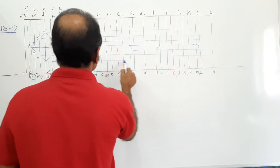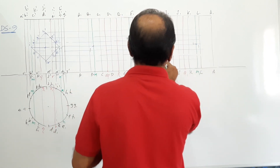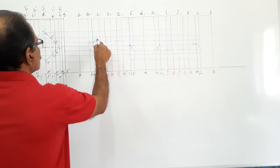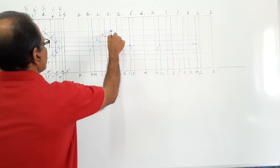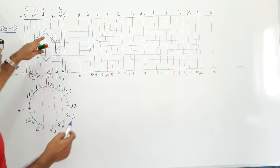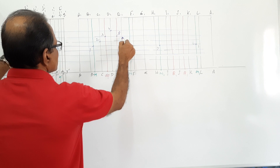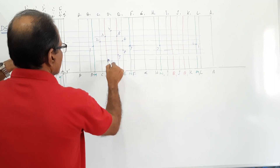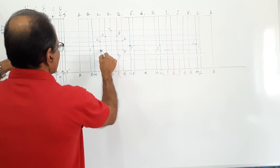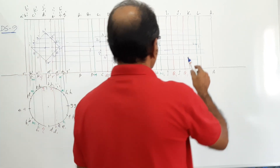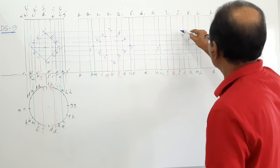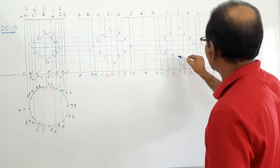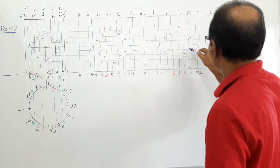Continue marking eleven-dash and nine-dash, then ten-dash. Now mark the actual points: one, two, three, four — referring to the drawing — five, six, seven, eight, nine, ten, eleven, twelve. Similarly on the other side: one, two, three, four, five, six, seven, eight, nine, ten, eleven, twelve.